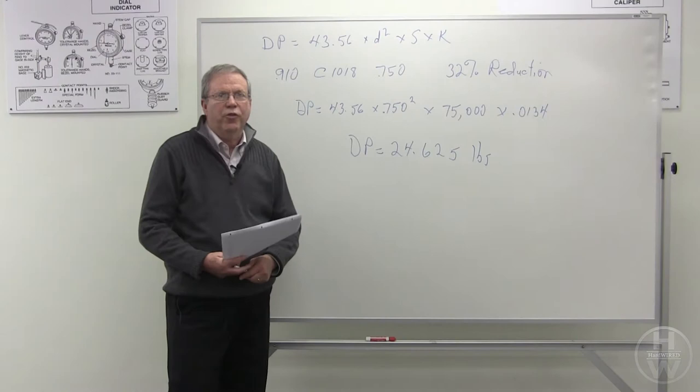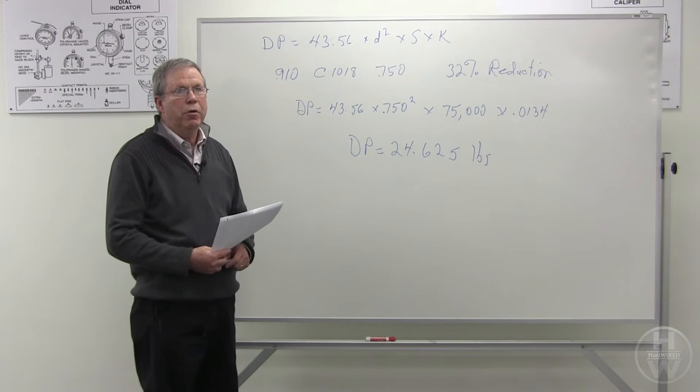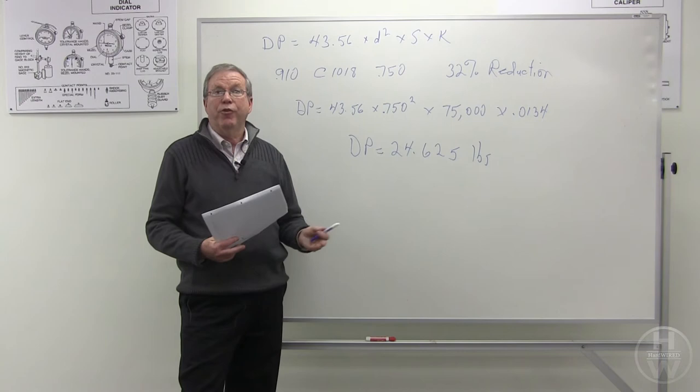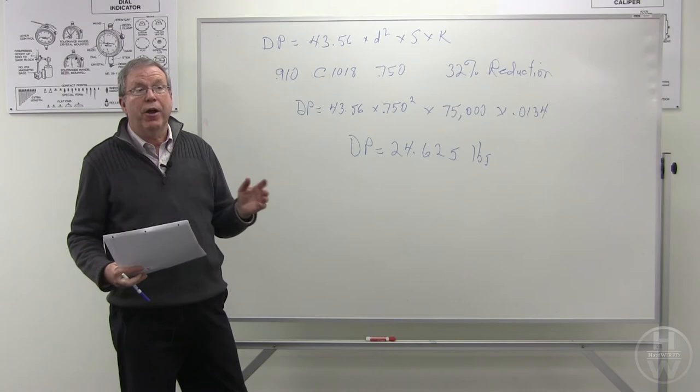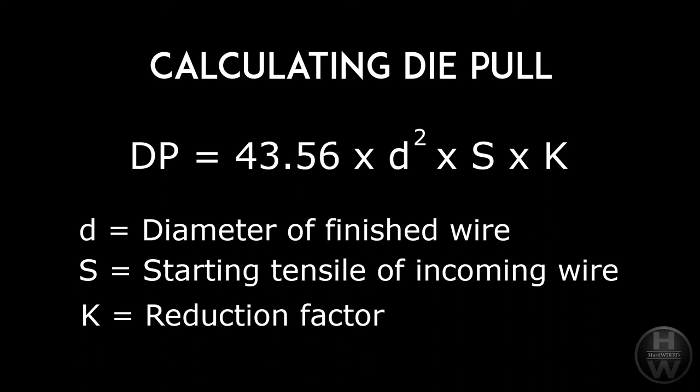Okay, so now that we know what our bull block can pull in the form of die pull, we want to compare that to what a certain rod size down to a certain finish size what that die pull would also relate to. And to figure out that die pull, we're going to use the following formula, which is die pull equals 43.56 times diameter squared.